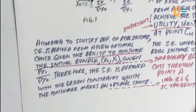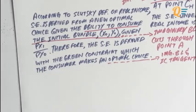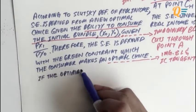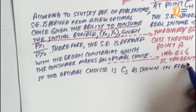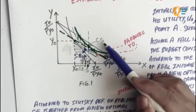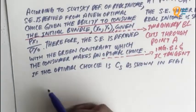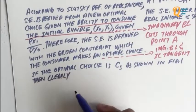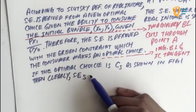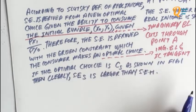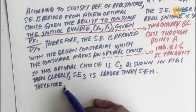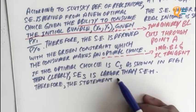Let's just finish up the sentences. If the optimal choice is CS as shown in figure 1, then clearly SES is larger than SEH. Therefore, the statement is false. It's that simple — you've just answered a short question for Chapter 2.